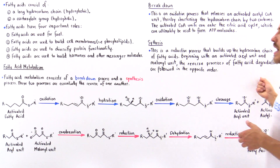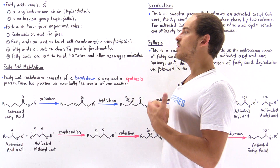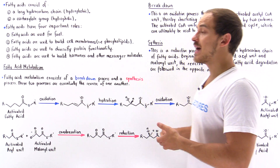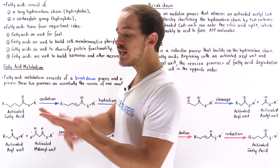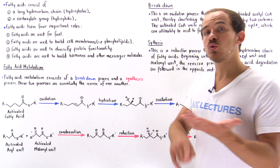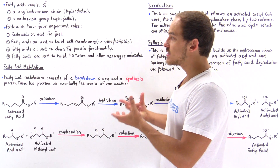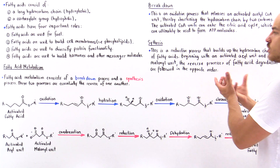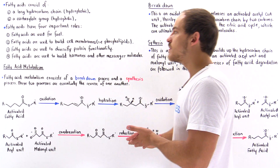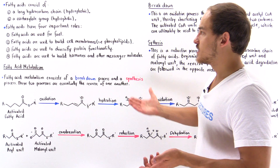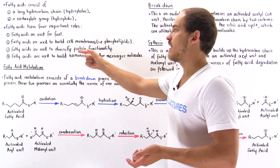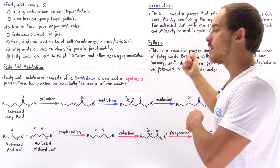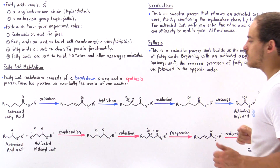Now what about fatty acid synthesis? Why would we want to synthesize fatty acids? If we have plenty of ATP molecules and don't want to form any more, our cells will take these acetyl units and synthesize fatty acids from them. Or if we want to build a hormone, modify a protein, or build up our cell membrane, we can build up these fatty acids and use them in those processes.